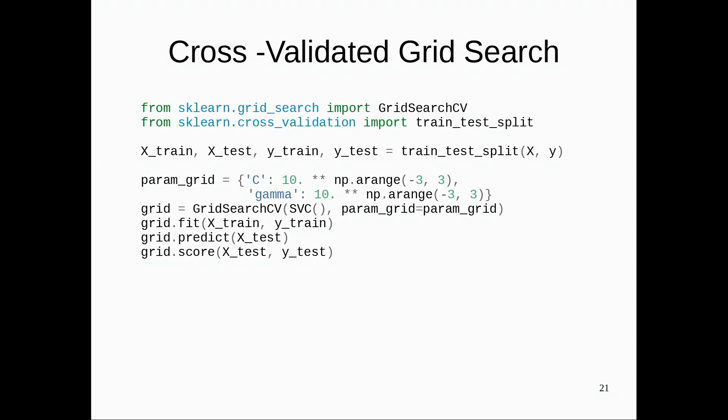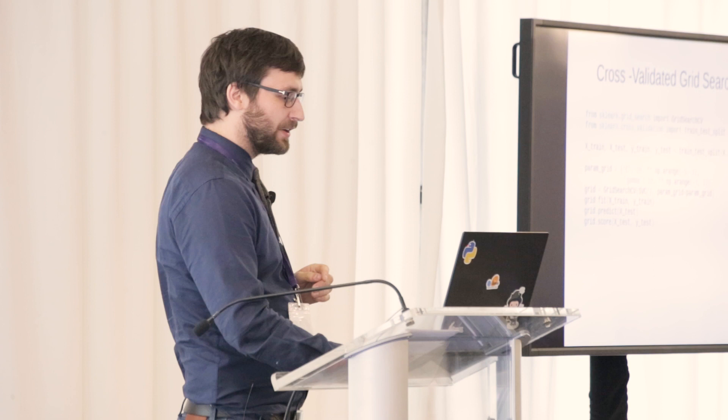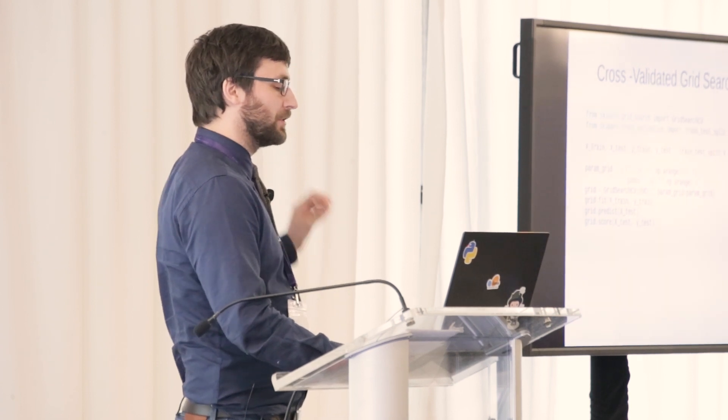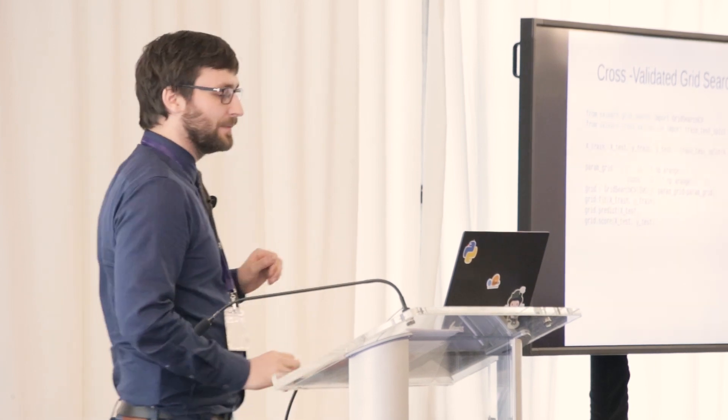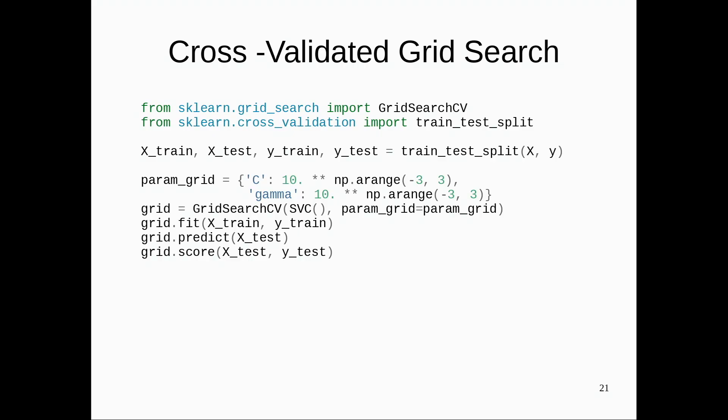Then I need to define the parameters I want to search over. So here SVC is a support vector machine. By default, I use the RBF kernel. There's two parameters associated with this: regularization parameter C and kernel bandwidth gamma. And so now I specify a grid. What values of C and gamma do I want to try out? So here I basically give an exponential range from 10 to the minus 3 to 10 to the 2 for both C and gamma. So this defines my search space that I want to adjust the parameters over.